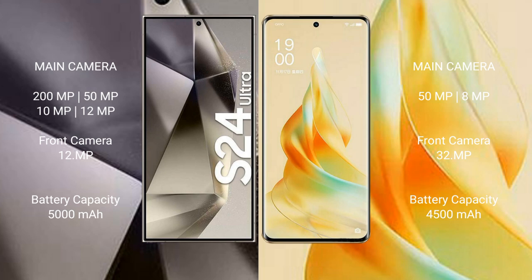Samsung Galaxy S24 Ultra rear quad camera setup: 100MP plus 50MP plus 10MP plus 12MP, front camera 12MP. OPPO Reno 9 Pro rear dual camera setup: 50MP plus 8MP, front camera 32MP.